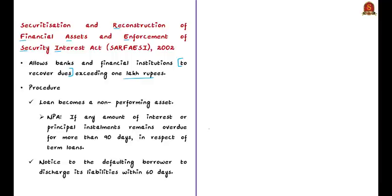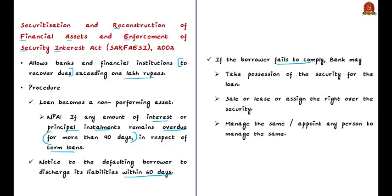This is possible only when the NPAs are backed by securities charged to the bank by a mortgage or assignment. For example, assume an individual has mortgaged a property and availed a loan from a bank, and this loan has become an NPA. A loan is considered non-performing if any amount of interest or principal installments remains overdue for more than 90 days in respect of term loans. Upon default, banks can seize the securities without court intervention, but first must give a written notice to the defaulting borrower requiring it to discharge its liabilities within 60 days.